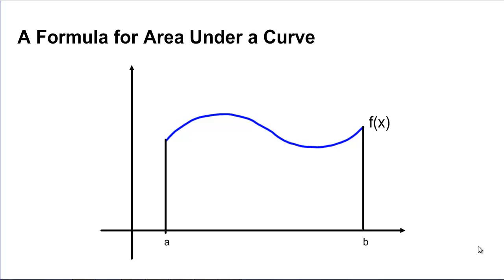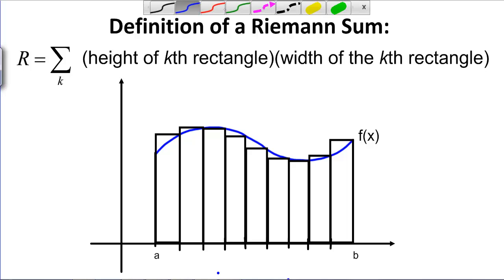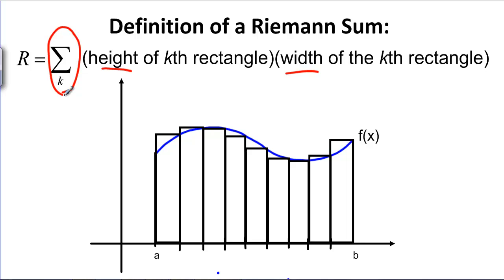In this video we're going to develop a formula for finding the area under a curve using rectangles. We want to take the area from A to B under the curve F of X, split it up into rectangles, find the area of each rectangle by multiplying the height times the width, and then add up the areas of all these rectangles.